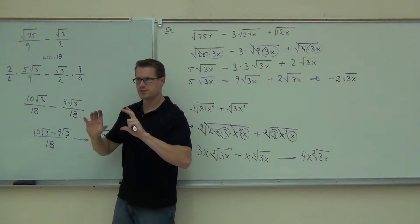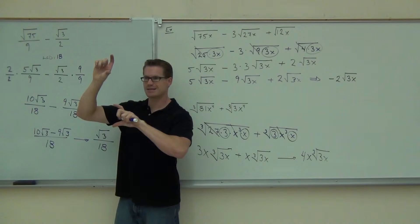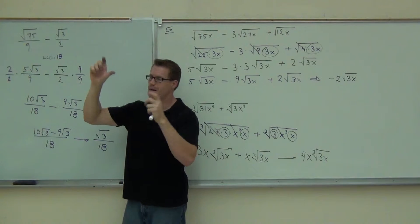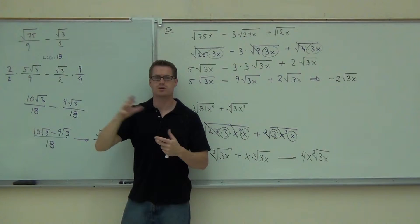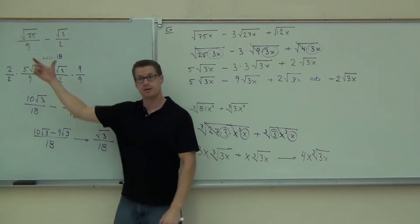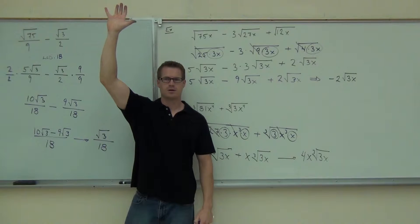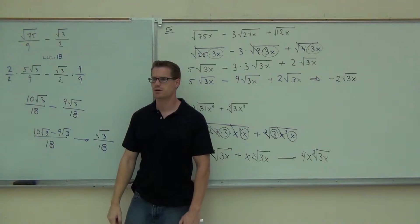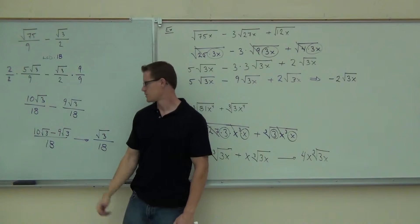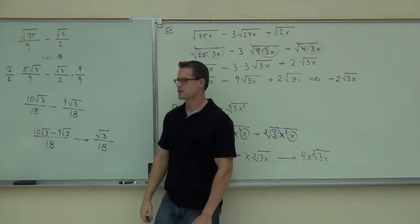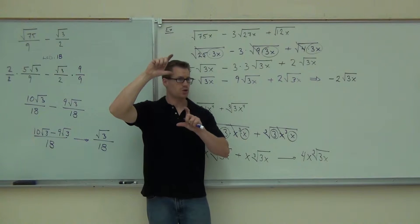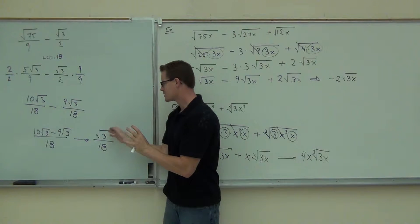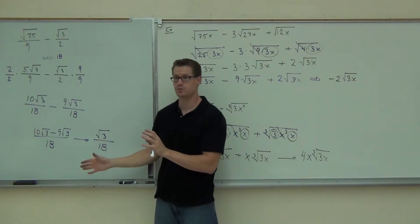Can you combine those roots? The first thing we did when we had a radical over a radical — we didn't simplify first, we combined them first. That's always what you do when you have a radical over a radical. However, if you don't have that, go ahead and simplify because there's nothing you need to combine later — it's just that one root. Also, I cannot just simplify within a root unless I have that other root to combine it with.